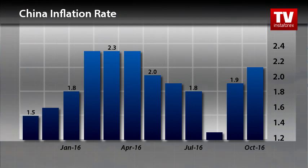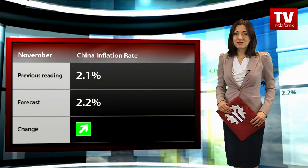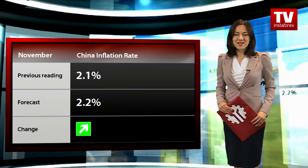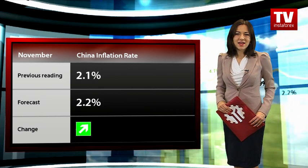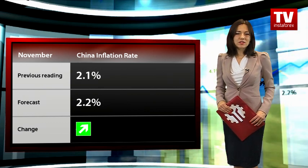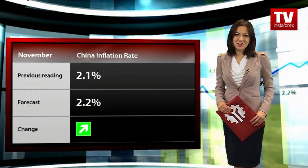This reading is below the PBOC's targeted level of 3%. The regulator tries to stimulate the slowing economy and inflation, but monetary softening does not change the situation much. However, input producer prices have been falling for over three years, setting an all-time record for China.